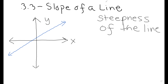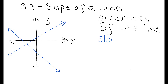The slope of a line is basically the steepness of a line — how steep is the line rising or falling. A rising line has a positive slope and a falling line has a negative slope. The slope is a ratio measured by the change in y divided by the change in x.